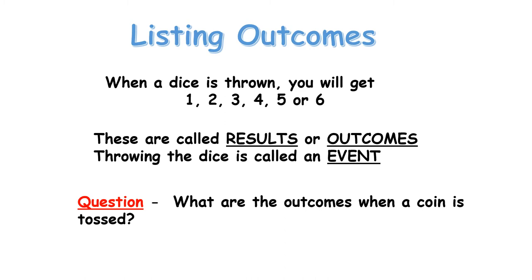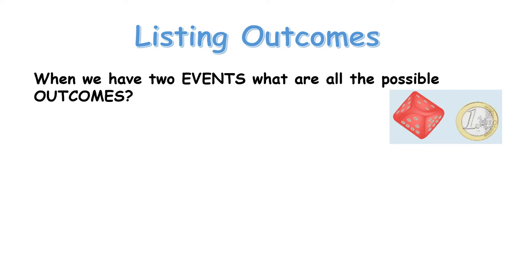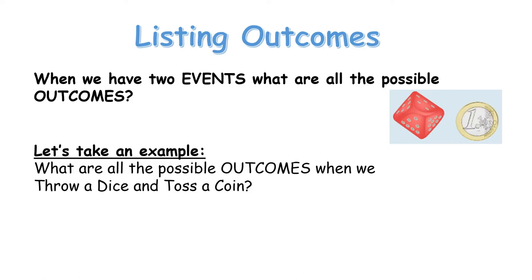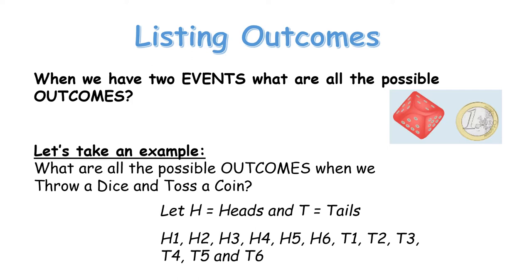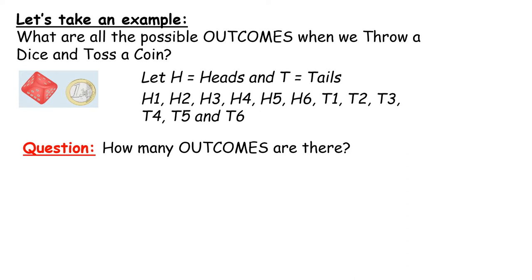If I asked you what are the outcomes when you toss a coin, there are two: heads or tails. What if I have two events - rolling a dice and tossing a coin? You could get heads with 1, heads with 2, heads with 3, and so on, or tails with 1, and so on. If we look at all those outcomes, there are actually 12 in total.